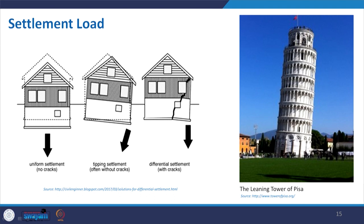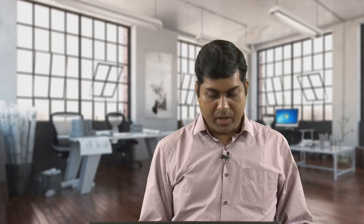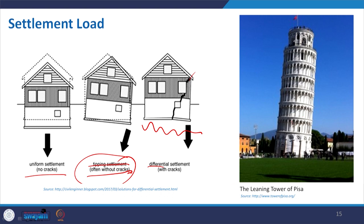Settlement load: if the land sinks due to water body and ground water table, the dead load tries to dip the building down and it may tilt. Damage caused by soil settlement below the structure is called settlement load. If settlement is uniform, the building settles slowly with no damage. Tipping settlement causes tilting — the Leaning Tower of Pisa is the example. Differential settlement — unequal settlement — causes cracking.